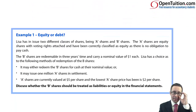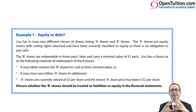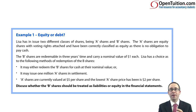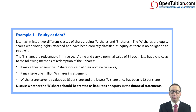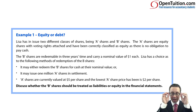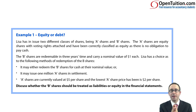Let's look at the example in your notes. The requirement says: discuss whether the B shares should be treated as liabilities or equity in the financial statements — so it's all about presentation. Is it a financial liability or is it equity? It is a financial liability if there is an obligation to pay cash. It is equity if there is no obligation and it just gives a residual interest in the net assets. Lisa has issued two different classes of shares: A shares and B shares. The A shares are equity shares with voting rights attached and have been correctly classified as equity — there is no obligation to pay cash.